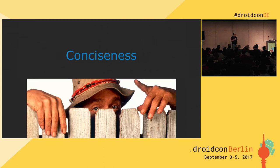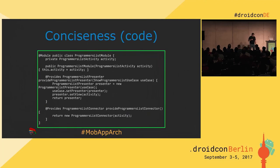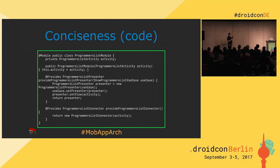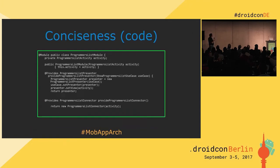Let's start with conciseness. Conciseness is important because we want code that can be easily read. The more words it has, the longer it takes to read. Code is not meant for computers to read, but for our colleagues and ourselves in a few hours — which means the terser the code, the better. The code on screen is a simple example of a Dagger 2 module written in Java.